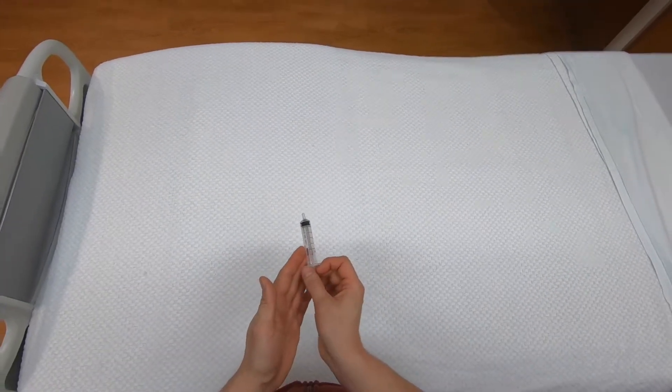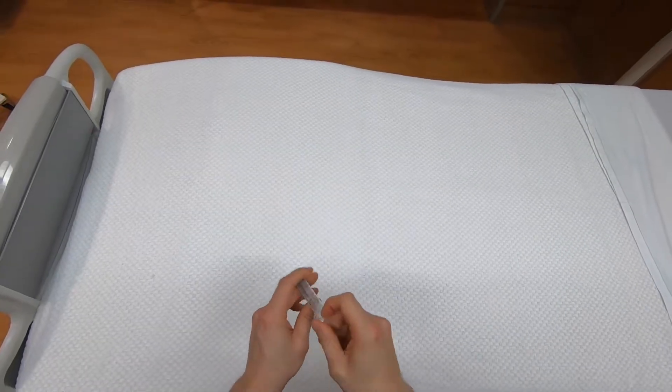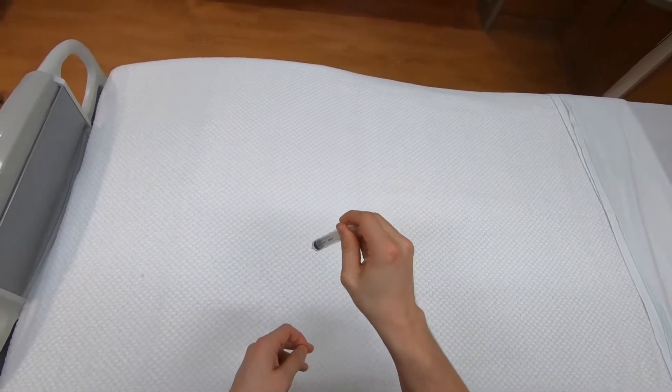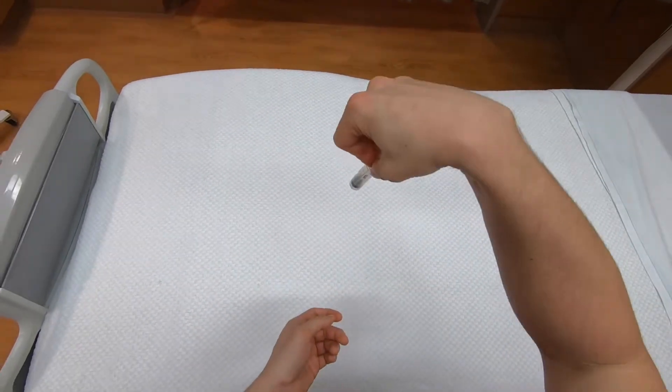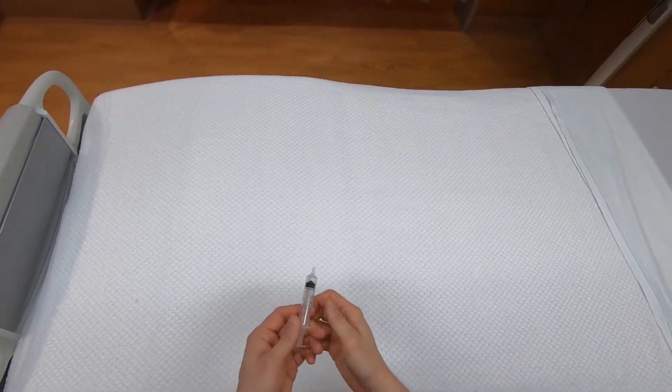I find these two grips are useful at different times. If you have a very shallow approach, such as for an IJ, pressing with your thumb is most convenient. If you're approaching more acutely, such as for a deeper vessel like a subclavian or femoral, you may want to press with your index finger because it's much easier to get your hand up here.